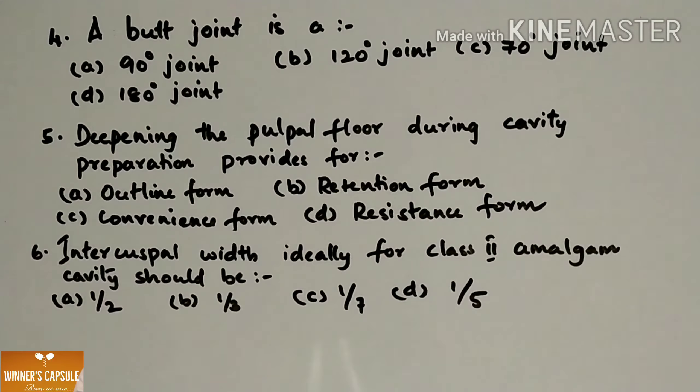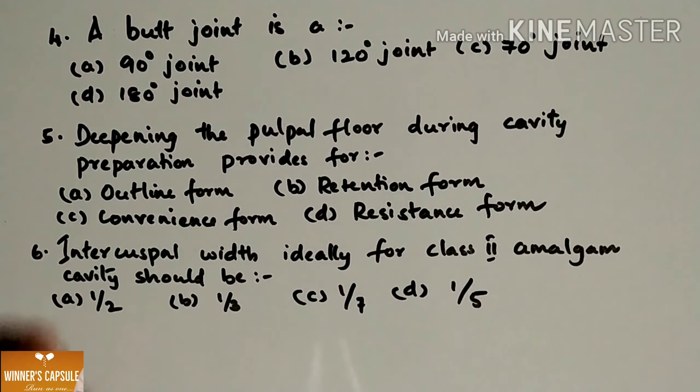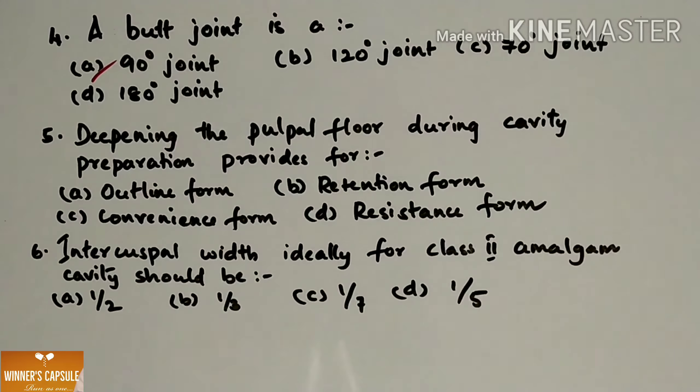Next question: A butt joint is (a) 90 degree joint (b) 120 degree joint (c) 70 degree joint and (d) 180 degree joint. Answer is option A, 90 degree joint.